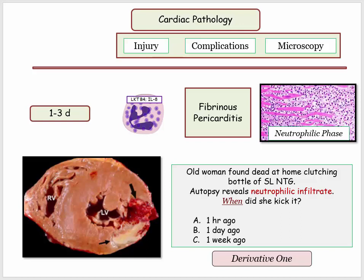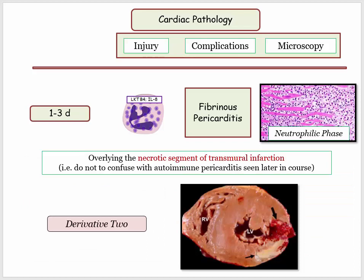Normal histopathology is present at one hour as we reviewed, and at one week the macrophages are at work doing what they do best. Here's the other key derivative during days one through three: acute pericarditis. We are talking about a transmural infarction with inflammation of the overlying pericardium — this would not be an expected outcome if injury is limited to the subendocardium.